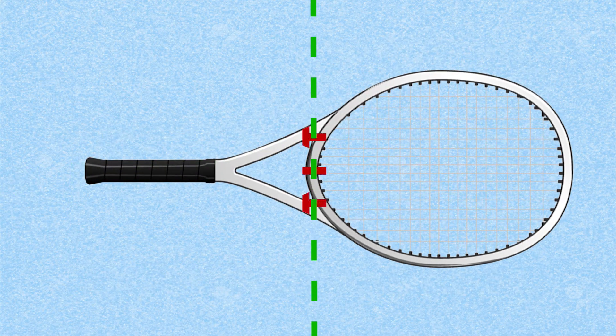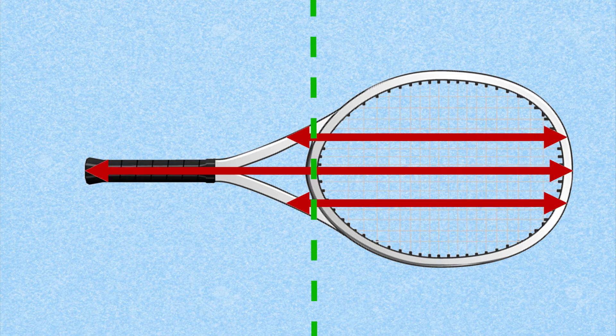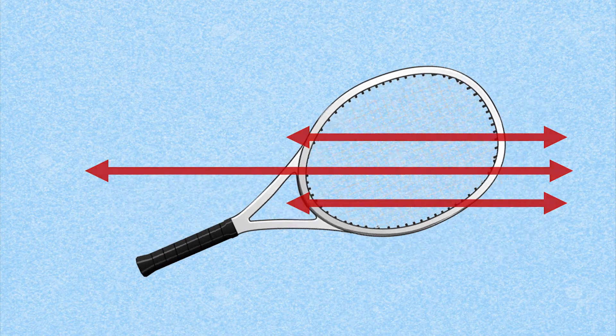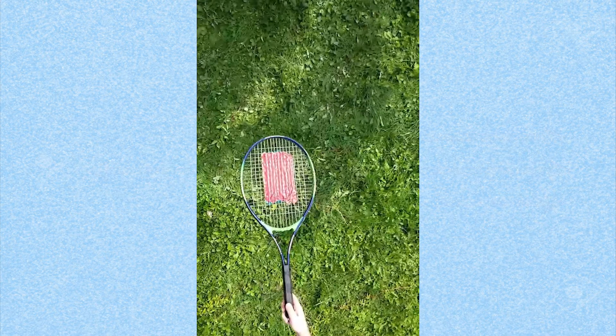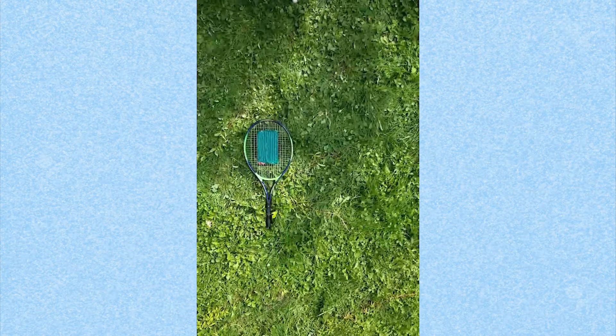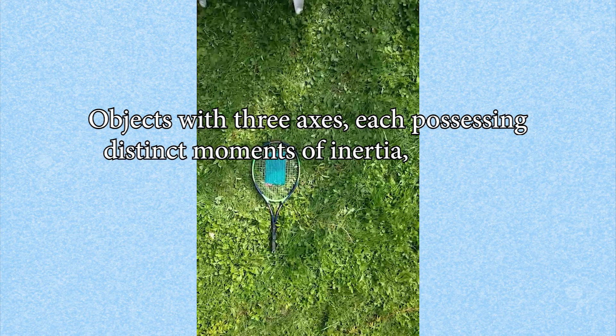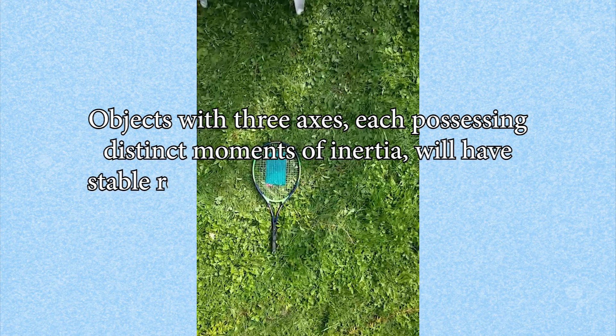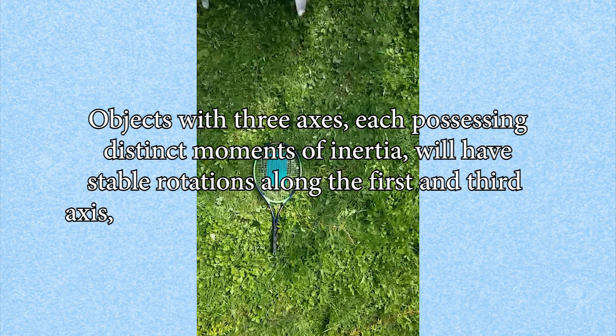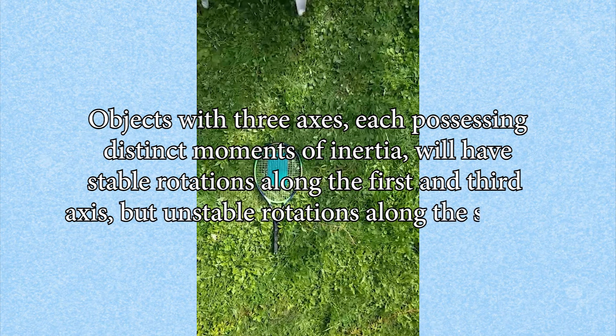When looking at the moment of inertia for the second axis, we see that it's a mix of both. Although distinct, if we spin the racket along it, the result is unexpected. There isn't only a rotation along the second axis, or intermediate axis, but along all three. This is the intermediate axis theorem: objects with three axes, each possessing distinct moments of inertia, will have stable rotations along the first and third axis, but unstable rotations along the second.